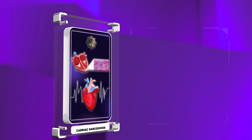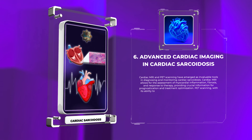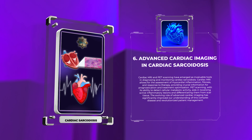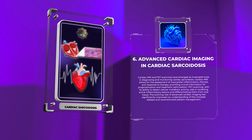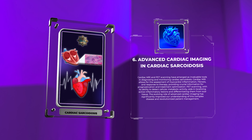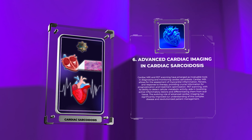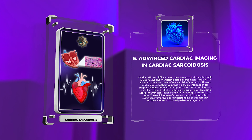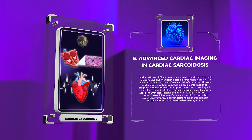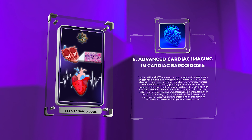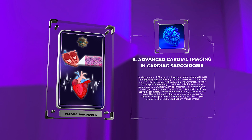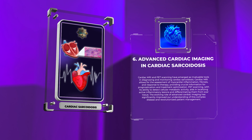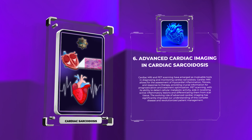Cardiac MRI and PET scanning have emerged as invaluable tools in diagnosing and monitoring cardiac sarcoidosis. Cardiac MRI allows for the assessment of myocardial inflammation, fibrosis, and response to therapy, providing crucial information for prognostication and treatment optimization. PET scanning, with its ability to detect cellular metabolic activity, aids in localizing active inflammatory lesions and differentiating them from scar tissue. The evolving role of advanced cardiac imaging has significantly improved our understanding of this complex disease and revolutionized patient management.